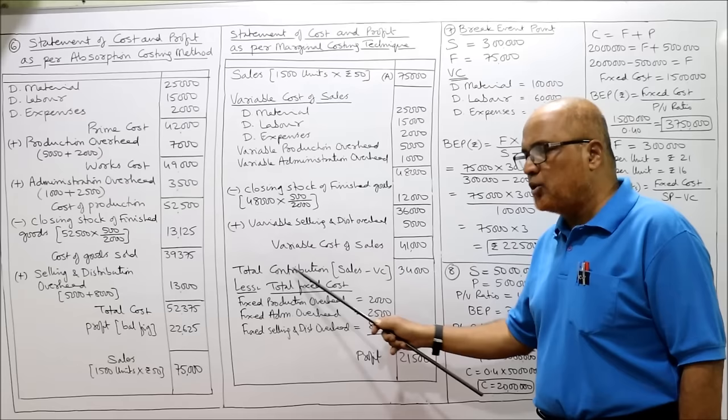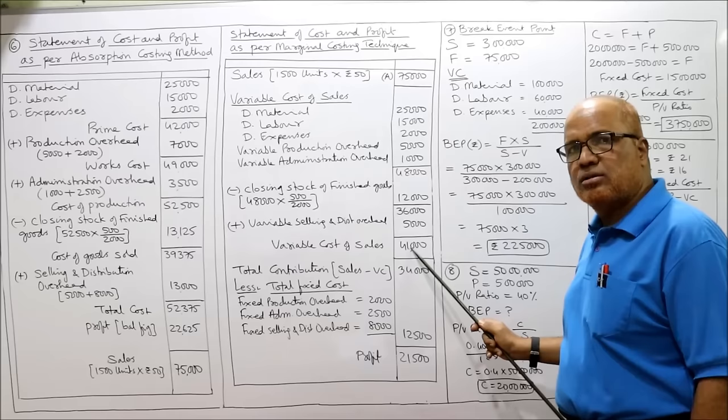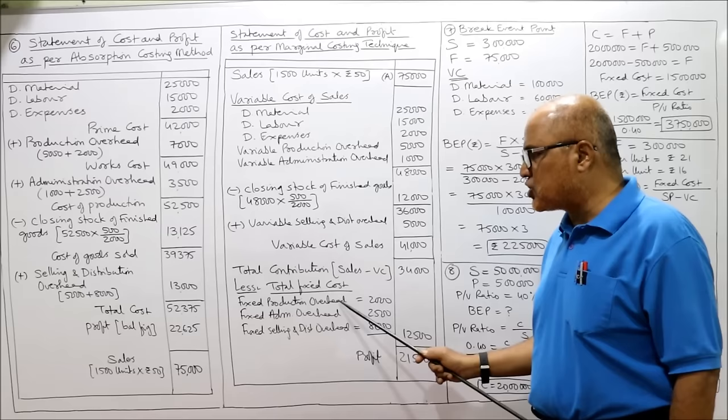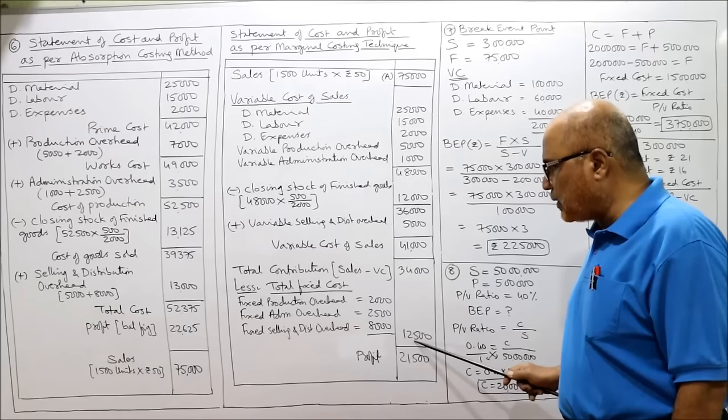Contribution = sales − variable cost = 75,000 − 41,000 = 34,000. Less total fixed cost: fixed production 2,000 + fixed administration 2,000 + fixed selling and distribution 8,000 = 12,500. Wait — that totals 12,000. Profit under marginal costing = 34,000 − 12,500 = 21,500 rupees. So absorption costing profit is 22,625 and marginal costing profit is 21,500.